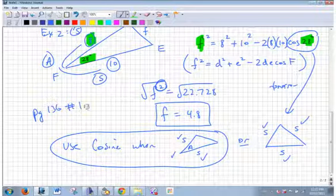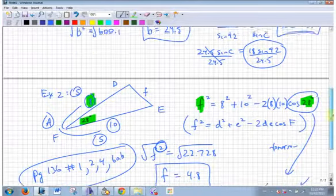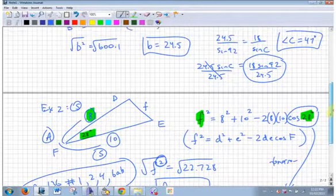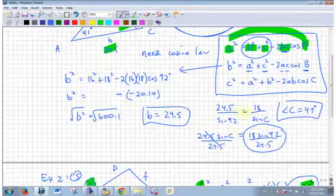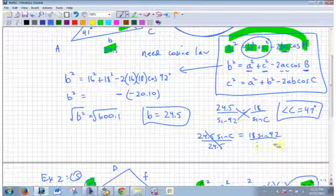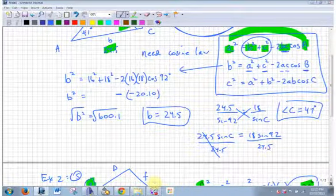So questions? 136, 1, 2, 4 and 6ab, that's it. Cassidy, you got a question? Can you scroll up? Where you put sine C and then you just cancel it, was that for sine? Okay, first cross multiply. Do you agree that's the same thing? And then I want to get rid of 24.5. Sine C's by itself. Whatever you do to one side do to the other side, right?